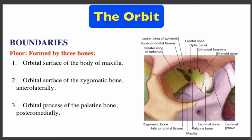The floor of the orbit is formed by three bones. Number one: orbital surface of the maxilla. Number two: orbital surface of the zygomatic bone laterally. Number three: orbital process of the palatine bone posteromedially.